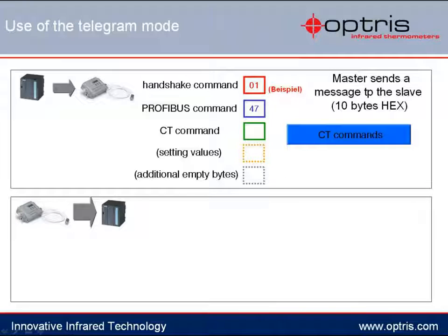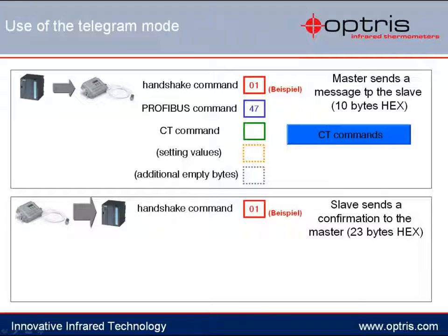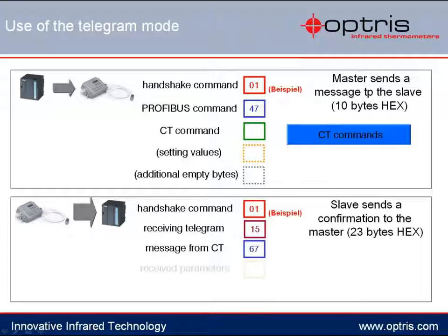The temperature sensor will reply with an answer telegram after receiving the telegram. This answer contains 23 bytes. The first byte returns our so-called handshake byte. The second byte follows with the value 15, indicating that a telegram has been received. The third byte is the answer byte from the temperature sensor, always the value 67. Afterwards, either the answer values from the sensor will follow if a request was sent, or the changed values will be received if new settings were requested. The missing bytes to reach 23 bytes will be filled with zeros.